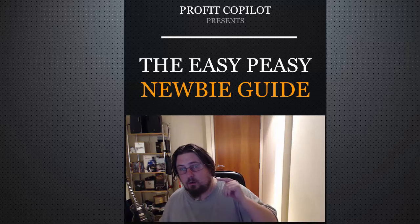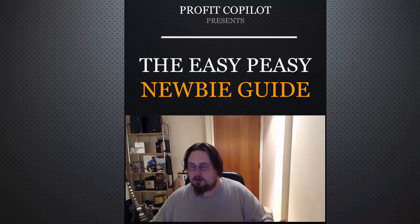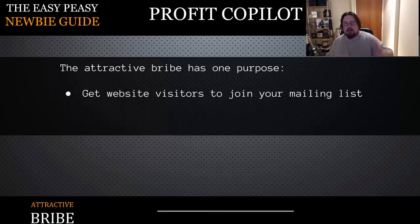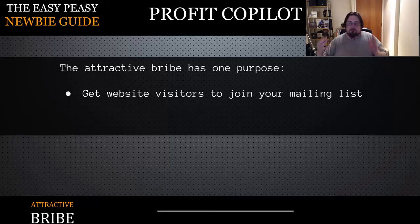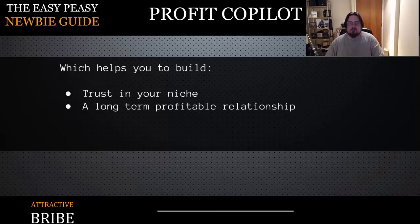Welcome back, guys. In this video, we're going to look at the attractive bribe. You might have heard it by another name — the lead magnet. I like to call it the attractive bribe because it's a more descriptive, more honest name, because that's exactly what we're doing. We are bribing people to join our email list. It has one function, and that is to get people on your mailing list. We achieve a few things by giving content away for free, but the sole purpose is to get people to join the email list. So it must be desirable, it must deliver absolute value, and it must solve their problem or give them the information they were expecting to receive. Doing this will help you build trust in your niche and hopefully a long-term profitable relationship with the people on your email list.